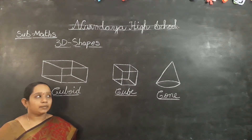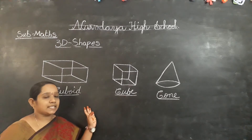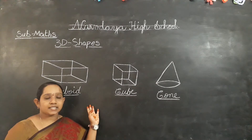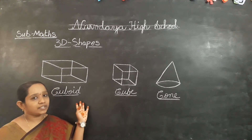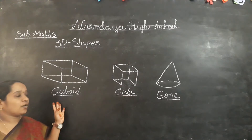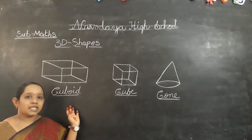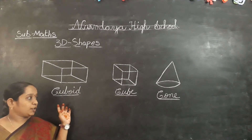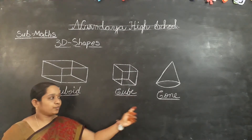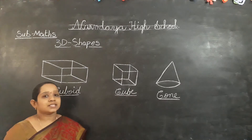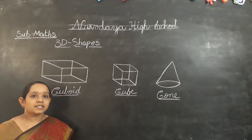Now we will learn about 3D shapes — edges, corners and faces of 3D shapes. The 3D shapes are: cuboid, cube, cone, cylinder, and sphere.